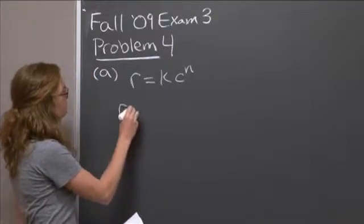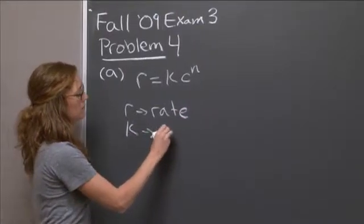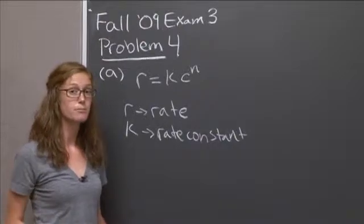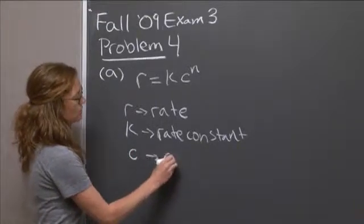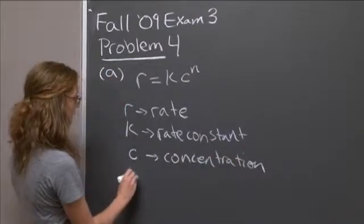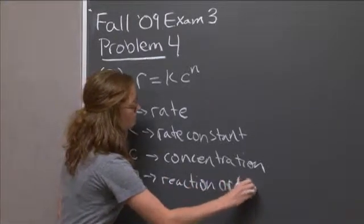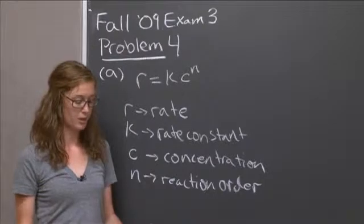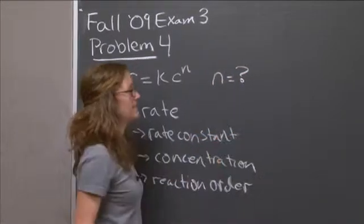So R is the rate, K is a rate constant. It is a function of temperature, but if you're at the same temperature, that rate constant will not change. It's constant. C is your concentration, and N is your reaction order. So this would be the place to start for this question. And now we know that we're solving for N.